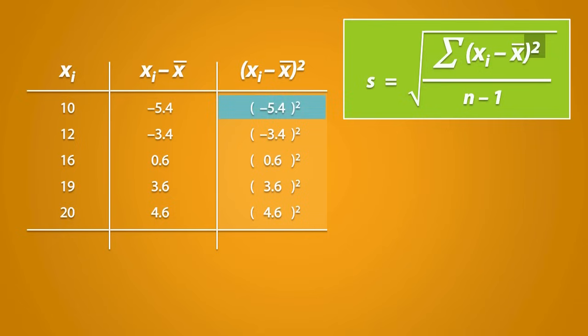Negative 5.4 squared is 29.16. Negative 3.4 squared is 11.56, and so on. The next step is to find the sum of what we have just calculated. You should find that this is equal to 75.2.